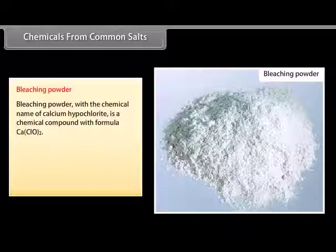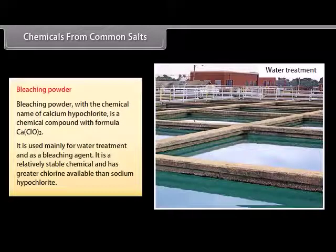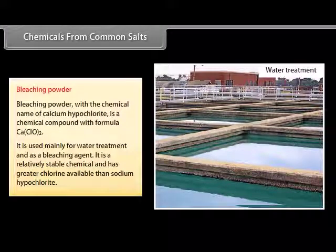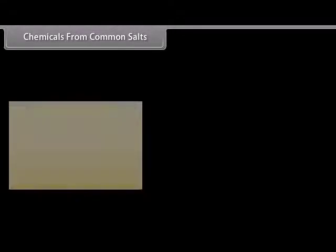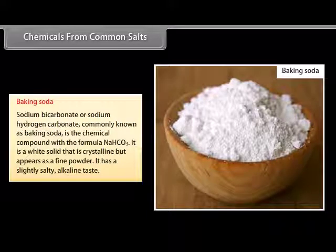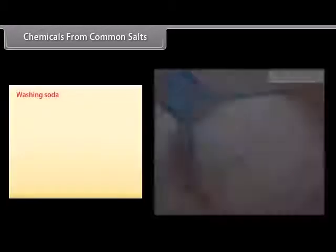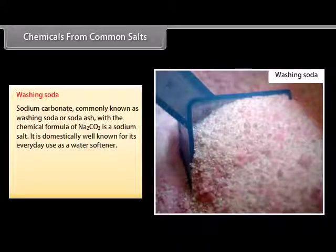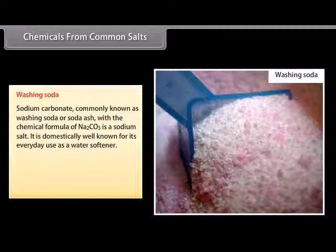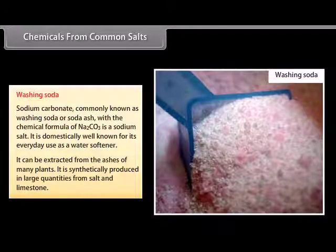Bleaching powder, with the chemical name calcium hypochlorite and formula CaClO2, is used mainly for water treatment and as a bleaching agent. It is relatively stable and has greater available chlorine than sodium hypochlorite. Baking soda, or sodium hydrogen carbonate (NaHCO3), is a white crystalline solid with a slightly salty alkaline taste. Washing soda, or sodium carbonate (Na2CO3), is a sodium salt well known as a water softener. It can be extracted from plant ashes and is synthetically produced in large quantities from salt and limestone.